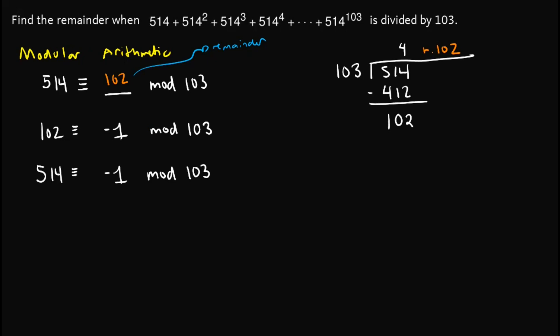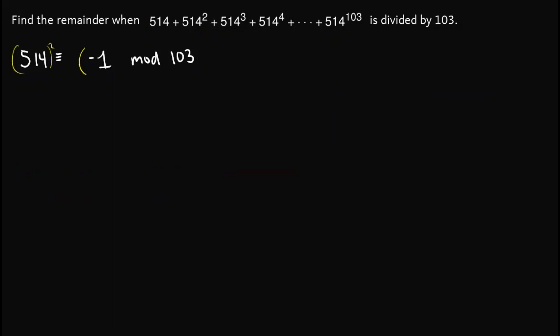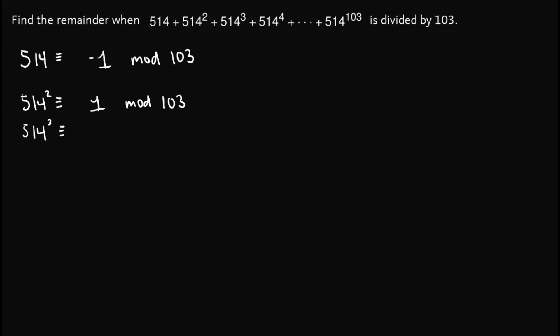We then know that 514 is congruent to negative 1, modulo 103. So what this tells us is that the remainder when we divide 514 by 103 is negative 1. Now what if we square this one — we will obtain 514 squared is congruent to negative 1 squared, or 1, modulo 103. And if we raise that to the 4th power, we have 514 raised to 4 is congruent to 1, modulo 103.